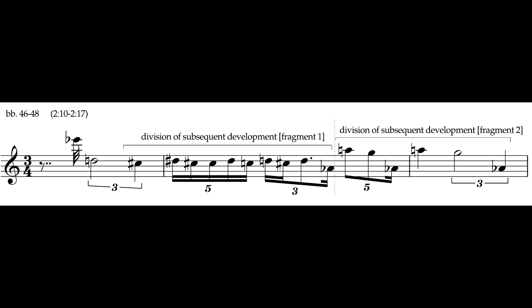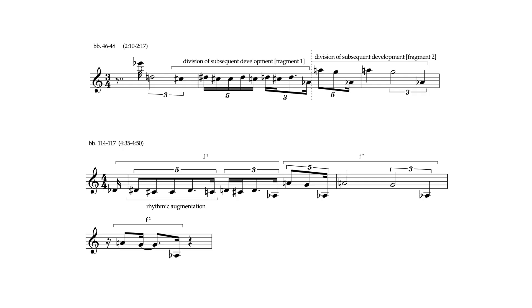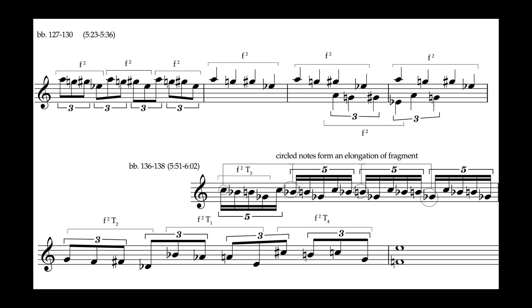In bars 46 to 48, another theme is introduced that is subsequently divided into two parts, with each part subject to further development. If we consider the theme as a division of two fragments, we notice how each one takes on a new form. In bars 114 to 117, the first fragment of the theme is rhythmically augmented, while the second is repeated with rhythmic variations. The second fragment becomes the source for new thematic material in bars 127 to 130, but takes on more of an accompanying role.